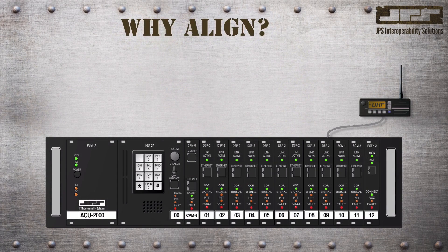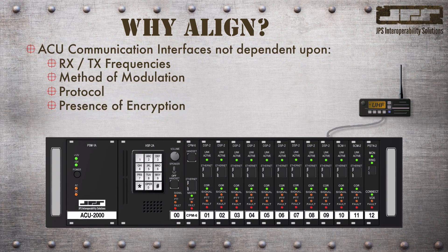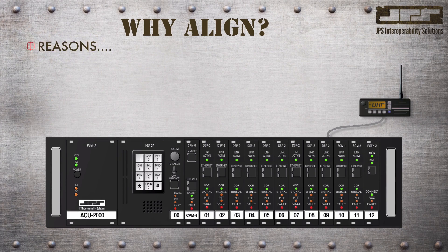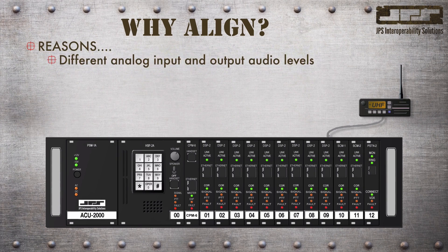The process is simple, but so what's the fuss about aligning modules or resources in the ACU gateway? Remember in a previous episode where we described the neutral or agnostic nature of the interface modules — we said we didn't care about the receive and transmit frequencies, the method of modulation, the protocol, the presence of encryption, or even the manufacturer of the radio system. Well, in fact, we do care about the disparate nature of different radios and radio systems. There are many reasons to align. The input preamp of a donor radio may require more drive than another donor radio, which might cause over or under modulation when donor radios are cross-connected.